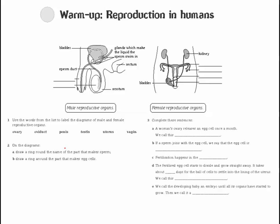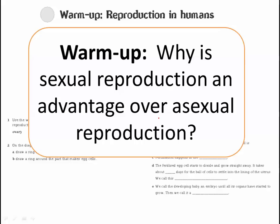Here are a few diagrams for you to look at — you'll get this handout in class. We're talking about reproduction, so pause the video and see if you can answer some questions, but don't spend too long. Another question to consider: why is sexual reproduction an advantage over asexual reproduction?